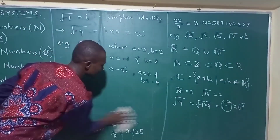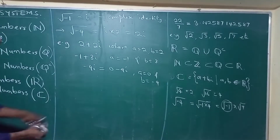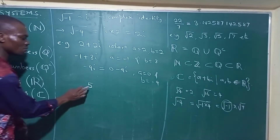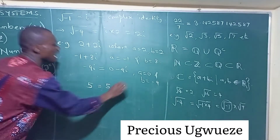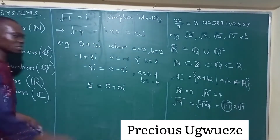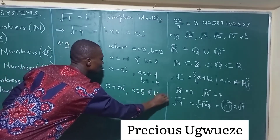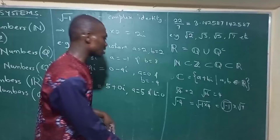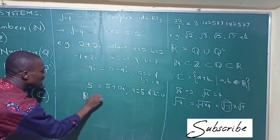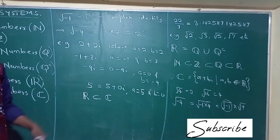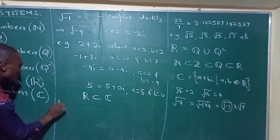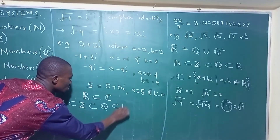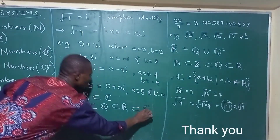What does that show us? The implication is that even any real number is also a complex number — because 5 can be written as 5 plus 0i, where a equals 5 and b equals 0. So every real number is actually a complex number. That means all real numbers are also contained in C — the complex numbers.